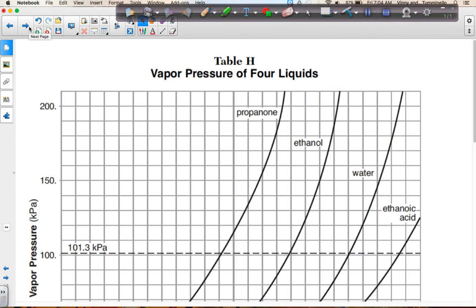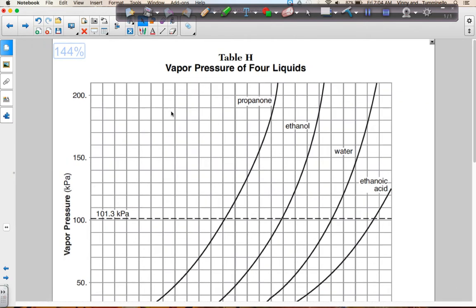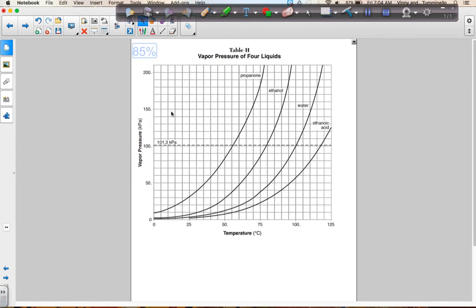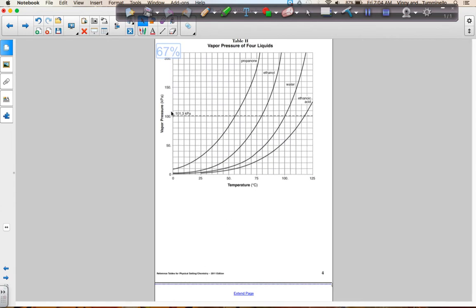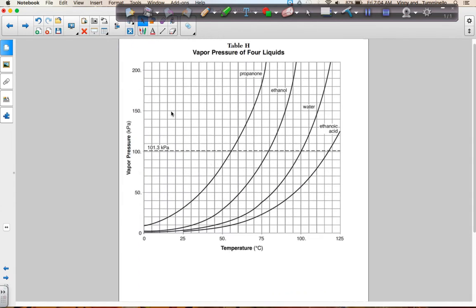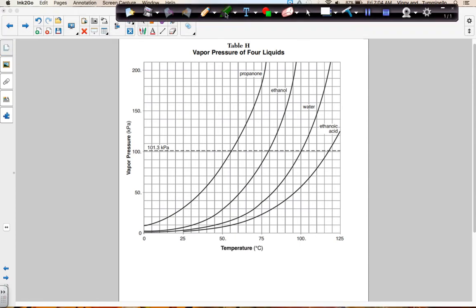Looking at table H, table H is going to show us the vapor pressure versus temperature for four different liquids. If we're looking at table H, we can also find out something about the boiling points of the substances. We can find out about their different intermolecular forces as well.